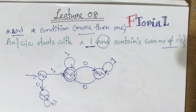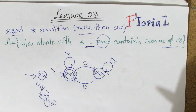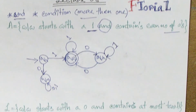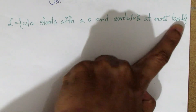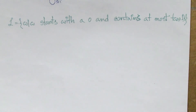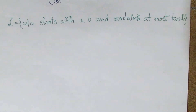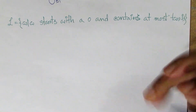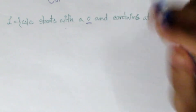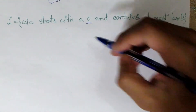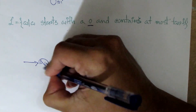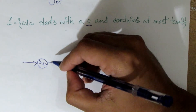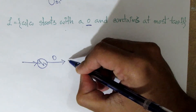Let's look at the test code — we have to test the length. Let's look at the next example. It starts with 0 and contains at most 2 ones. Let's look at the second example. The second example starts with 0, so we select 0 to start. Here we have state Q1 as the start state. We will proceed with 0 to start, leading to Q2.